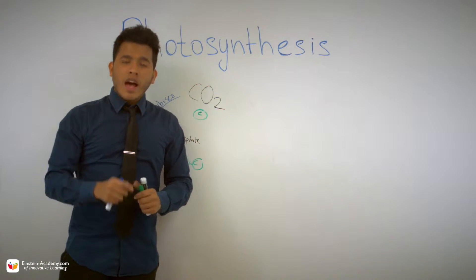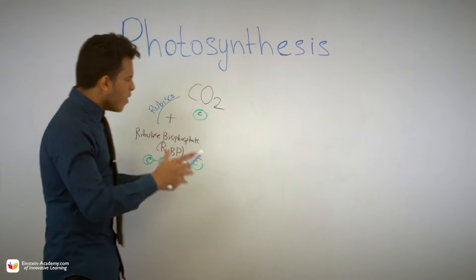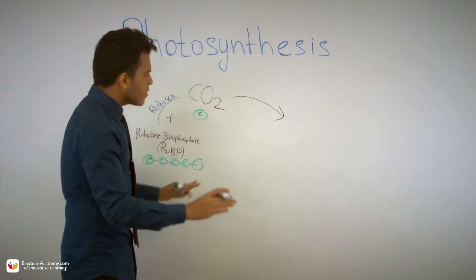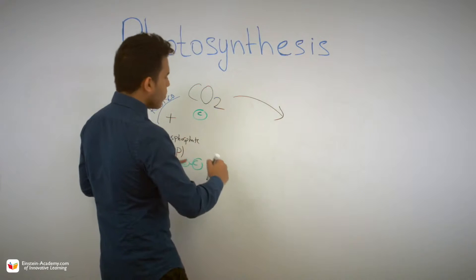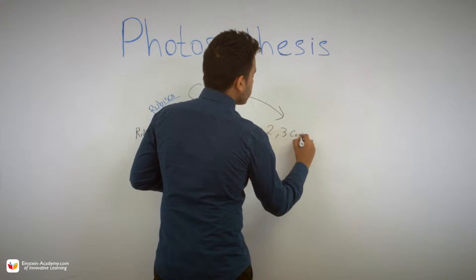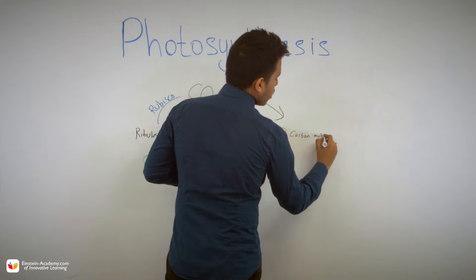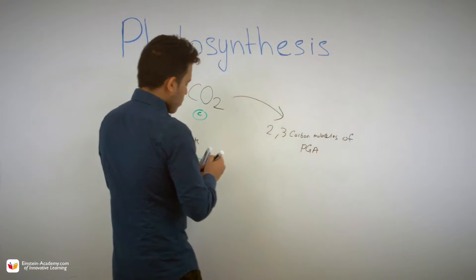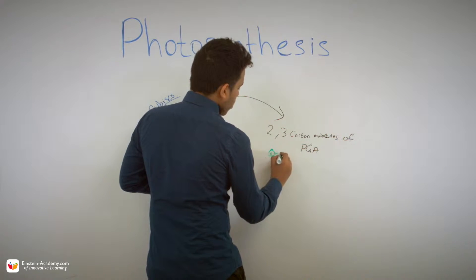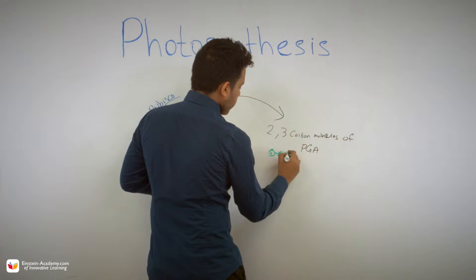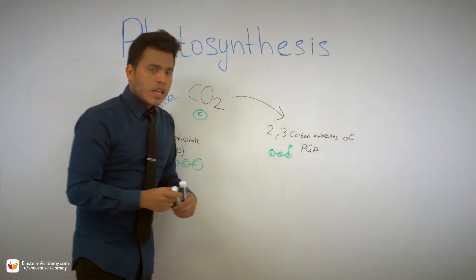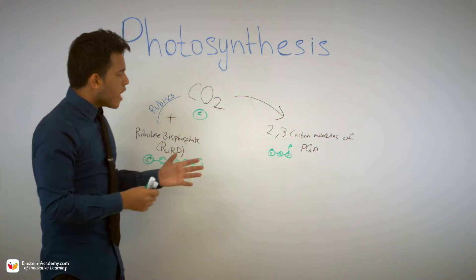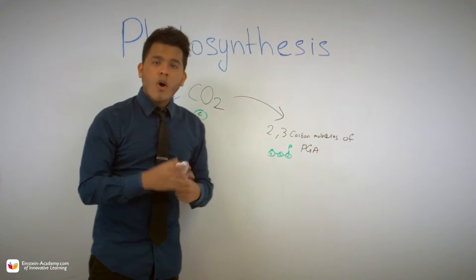When combined, this becomes a highly unstable molecule, and automatically, as soon as these molecules are joined, they split apart immediately. The six-carbon molecule splits apart into two three-carbon molecules of PGA.